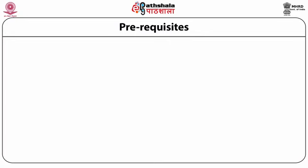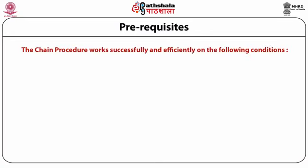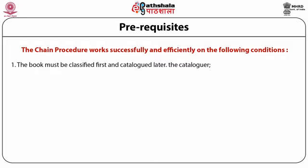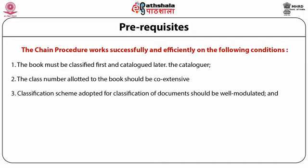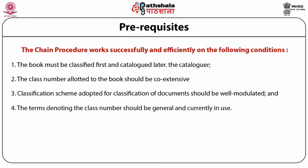Three requisites of chain procedure. Chain procedure works successfully and efficiently on the following conditions: first, the book must be classified first and catalogued later; second, the class number allotted to the book should be co-extensive; third, the classification scheme adopted should be well modulated; and fourth, the terms denoting the class number should be general and currently in use.